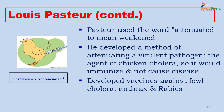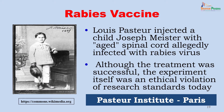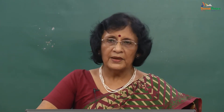Louis Pasteur used the word 'attenuated' for the first time to mean weakened. He developed a method of attenuating the virulent agent of chicken cholera so it would immunize chickens without causing disease. Later he developed vaccines with more human impact — the anthrax and rabies vaccines. In his famous experiment, he injected a child named Joseph Meister with the aged spinal cord of a rabid dog, and Joseph Meister recovered from rabies. Although his treatment was successful, the experiment itself was an ethical violation of research standards — he was not authorized to inject organisms into another individual, and this would not be acceptable today.